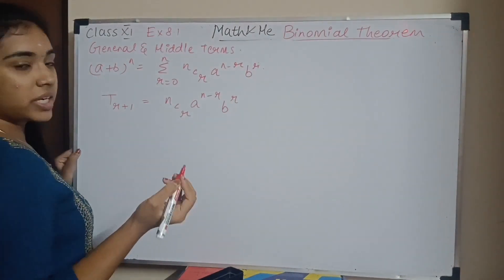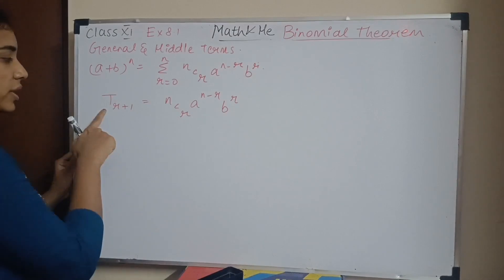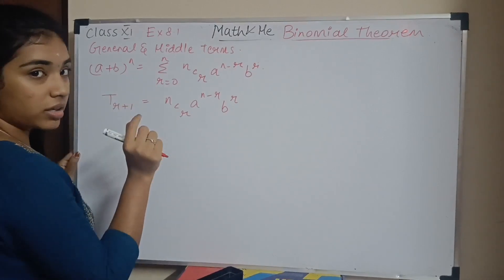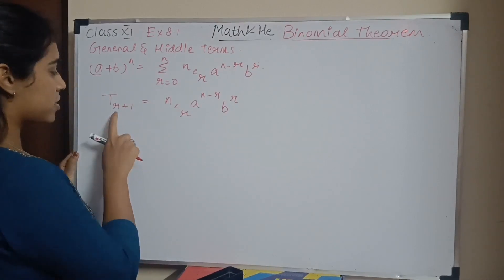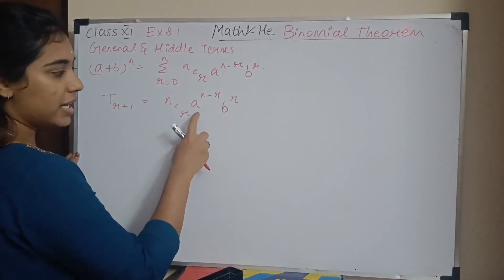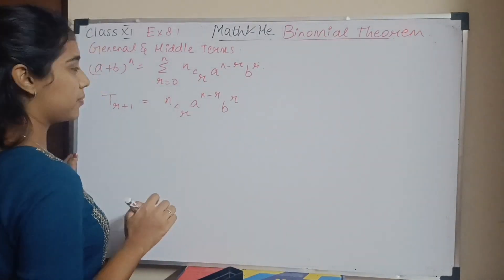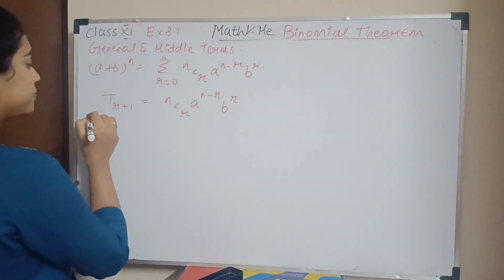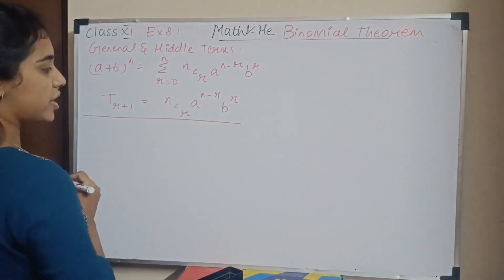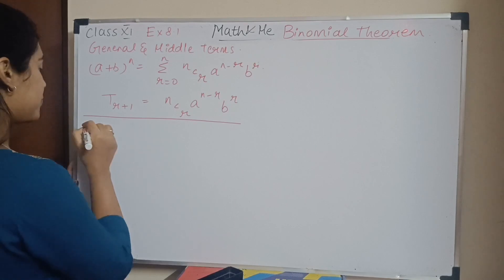So T_{r+1} is the general term — it tells you which term it is. The (r+1)th term equals nCr · a^(n-r) · b^r. Now let's move on to middle terms.